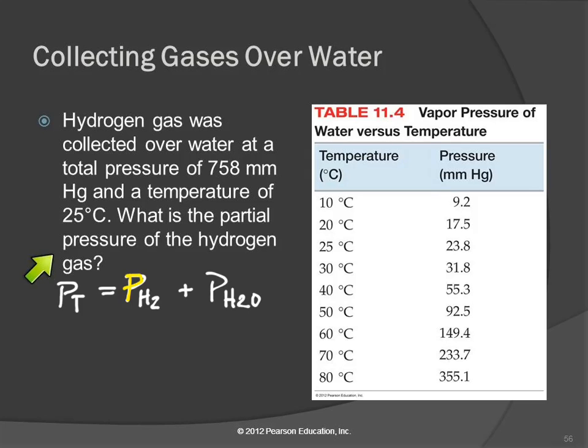We want this pressure of H2. The pressure of the hydrogen gas will equal the total pressure minus the pressure of the water. So the total pressure was 758, not torr, although it ends up being the same thing. Millimeters of mercury. Looking at the table, what's the partial pressure of the water?